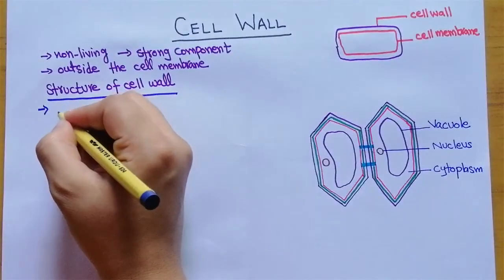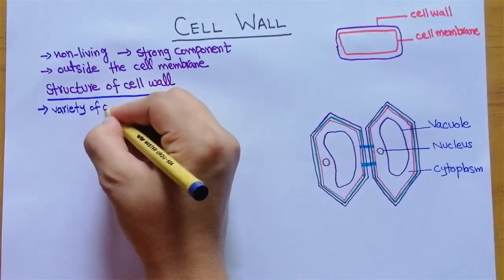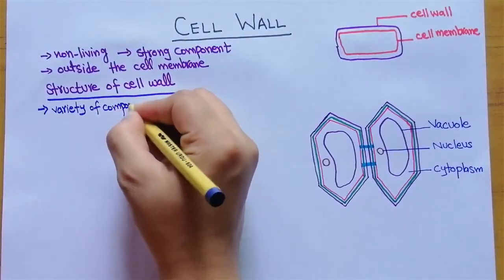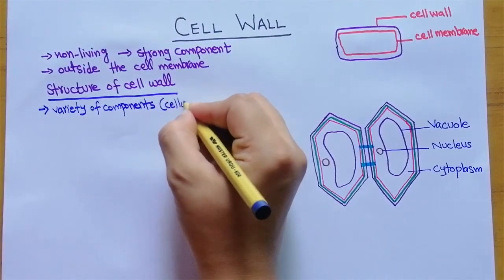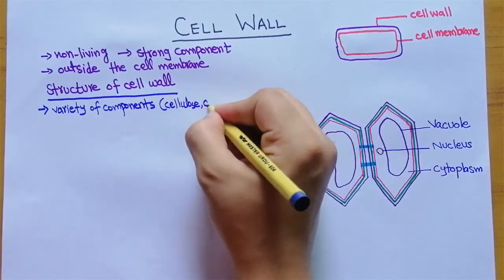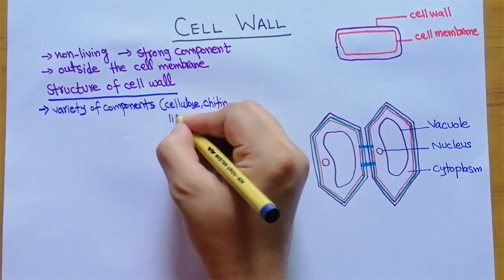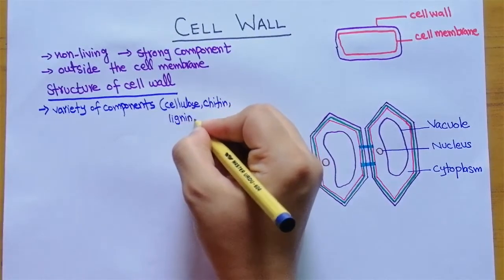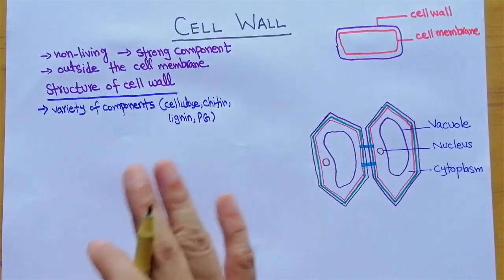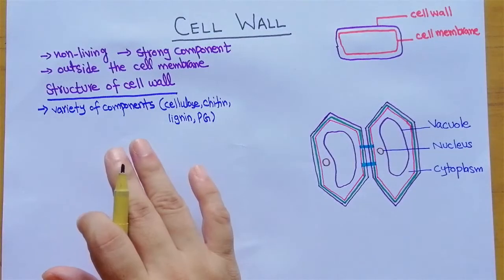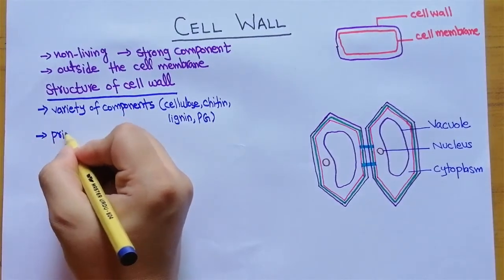Cell wall is made up of a variety of components. As I have already told you in my other lecture, it is made up of cellulose, chitin, lignin, or peptidoglycan. So there are so many components which are present in the cell wall.